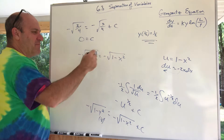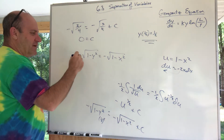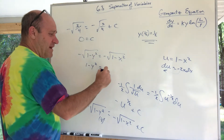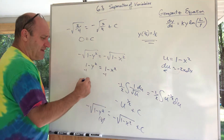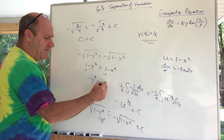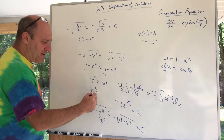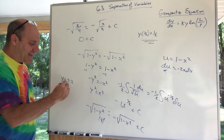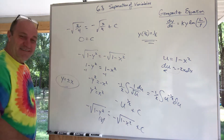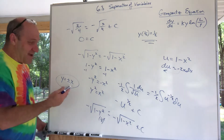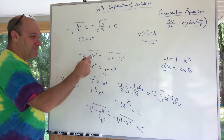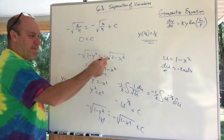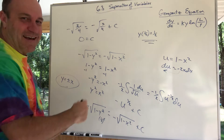Squaring both sides gets rid of the negatives: 1 minus y squared equals 1 minus x squared. Subtract 1 from both sides: negative y squared equals negative x squared. Multiply both sides by negative 1: y squared equals x squared. Take the square root of both sides: y equals plus or minus x. So that's an explicit version of the answer — y equals x or y equals negative x. That's a funny problem.